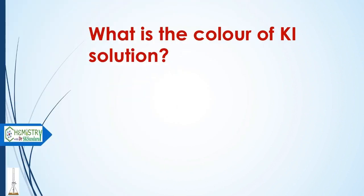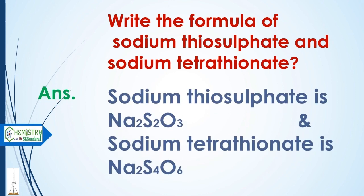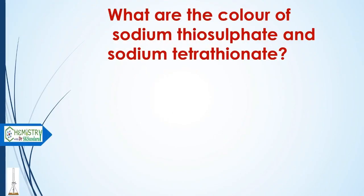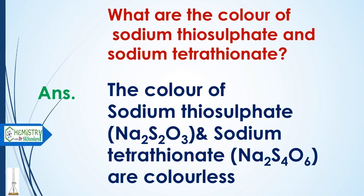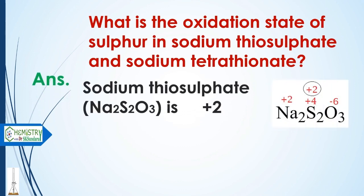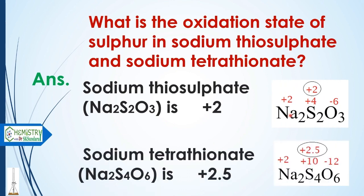What is the color of KI solution? The color of KI solution is colorless. Write the formula of sodium thiosulfate and sodium tetrathionate. Sodium thiosulfate is Na₂S₂O₃ and sodium tetrathionate is Na₂S₄O₆. The colors of both sodium thiosulfate and sodium tetrathionate are colorless. The oxidation state of sulfur in sodium thiosulfate is +2, and in sodium tetrathionate it is +2.5.